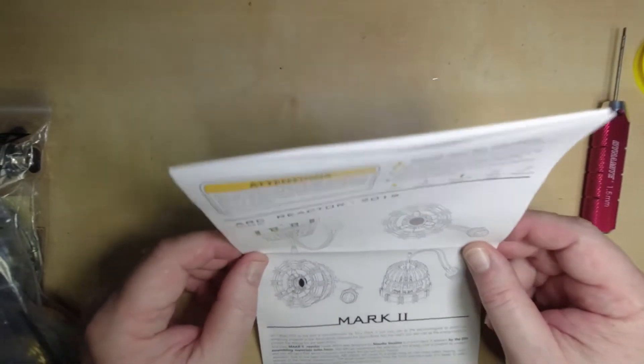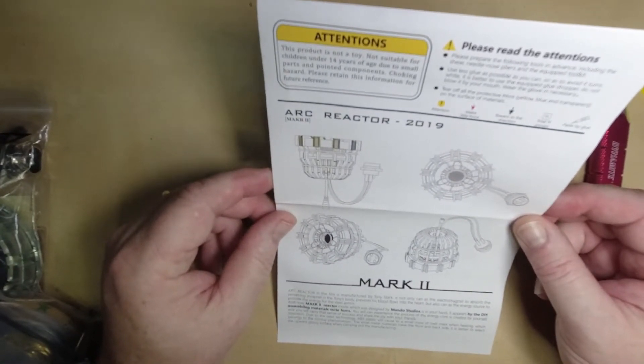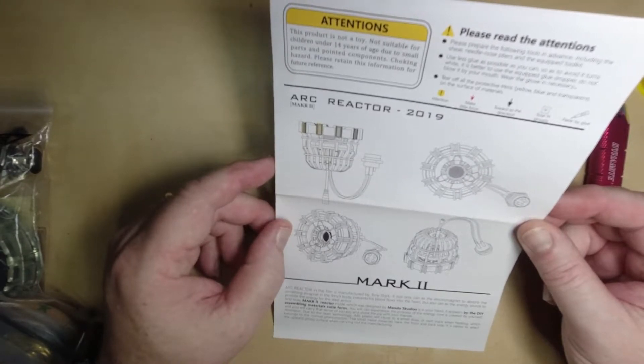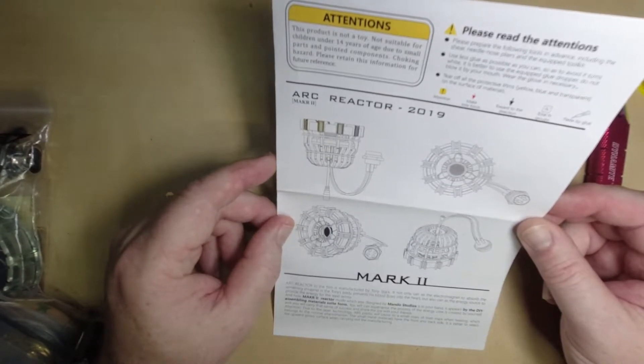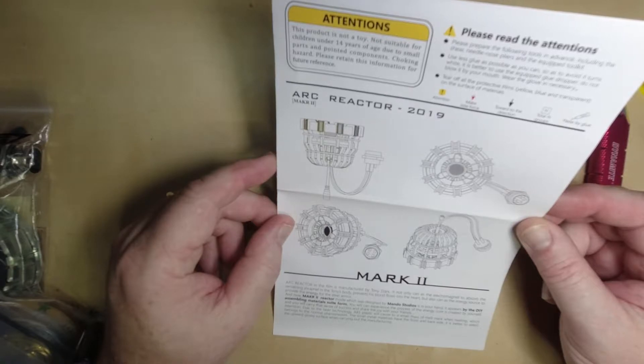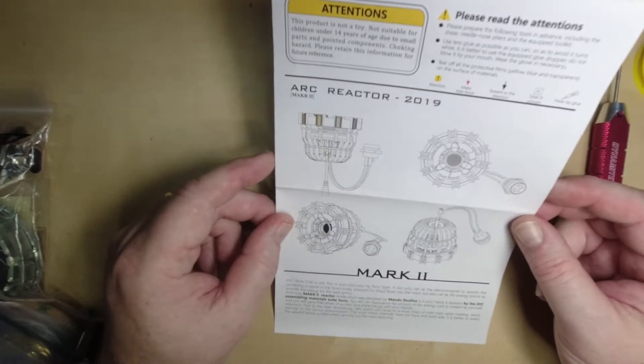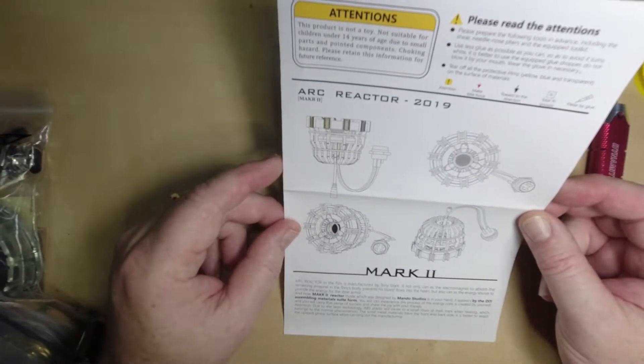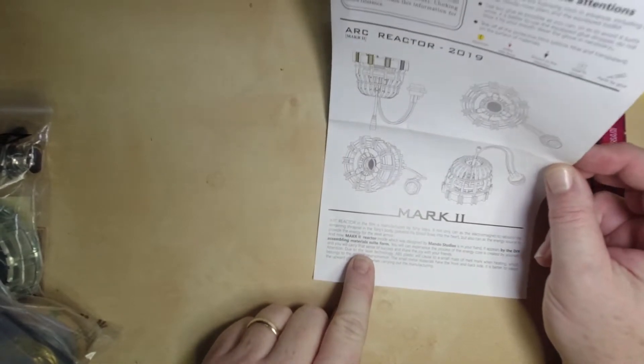I don't know if there was going to be glue. Let's look at the... This is pretty funny. Arc reactor in the film is manufactured by Tony Stark. It not only can as the electromagnet to absorb the remaining shrapnel in Tony's body, prevents his blood bows into the heart. But also can as the energy source to provide the energy for the steel armor. And now MAKR-2 reactor. It's supposed to be Mark II. M-A-R-K. You guys can see that it's down here. It's pretty funny.